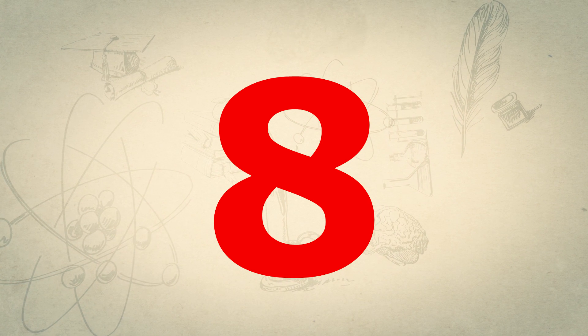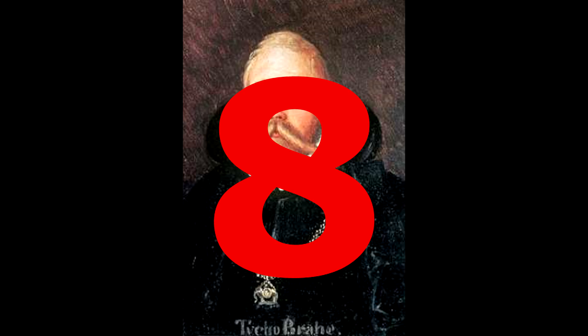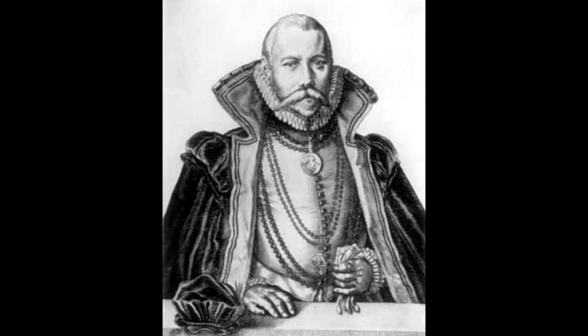Number 8. Tycho Brahe. Tycho Brahe, whose defining physical characteristic was no doubt his metallic nose, he lost his real one in a duel, was a famed Danish astronomer.